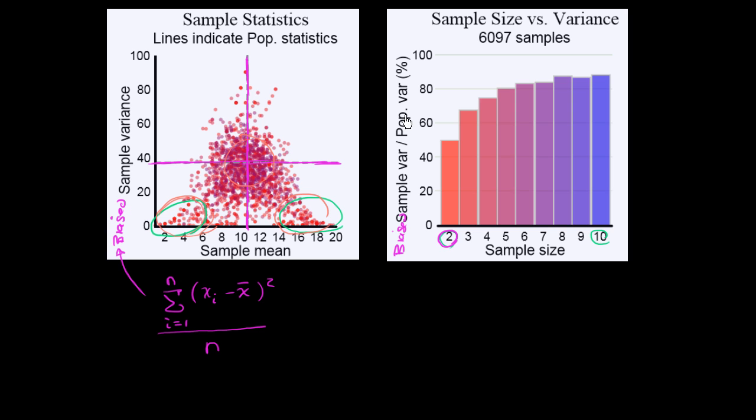and finding the mean over all of those, you see that over many, many, many trials, many, many samples of size two, that that biased sample variance over population variance, it's approaching half of the true population variance.